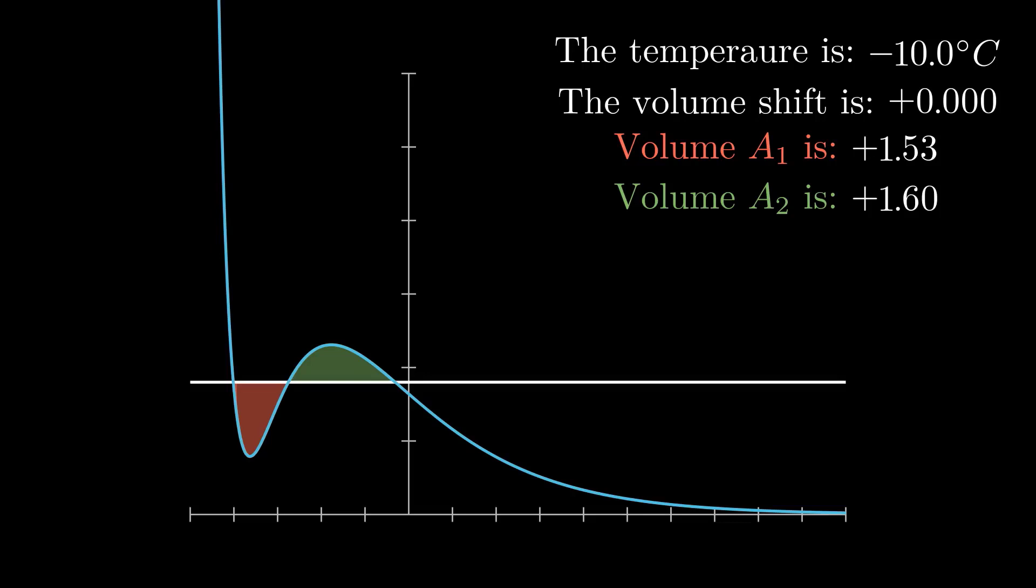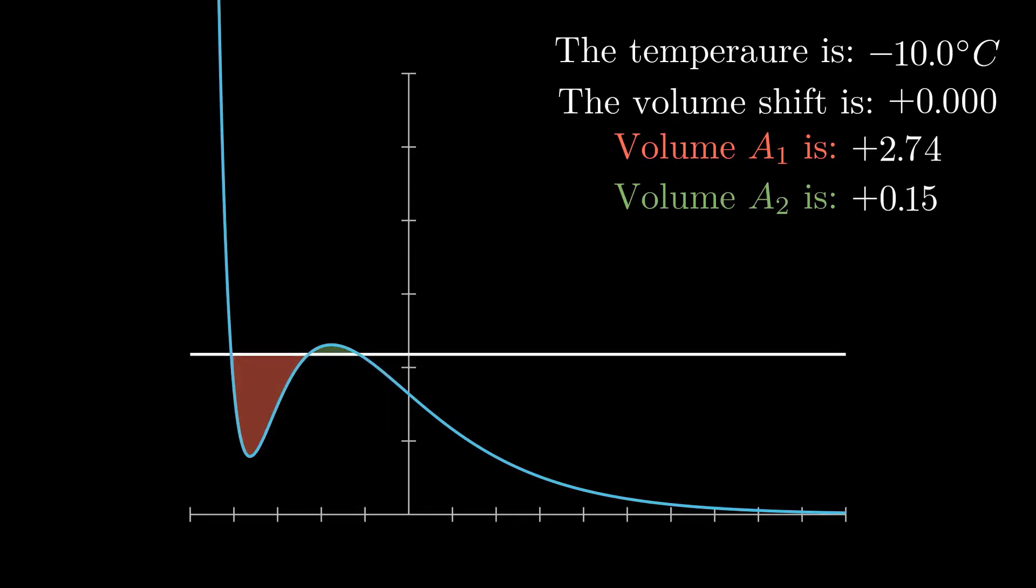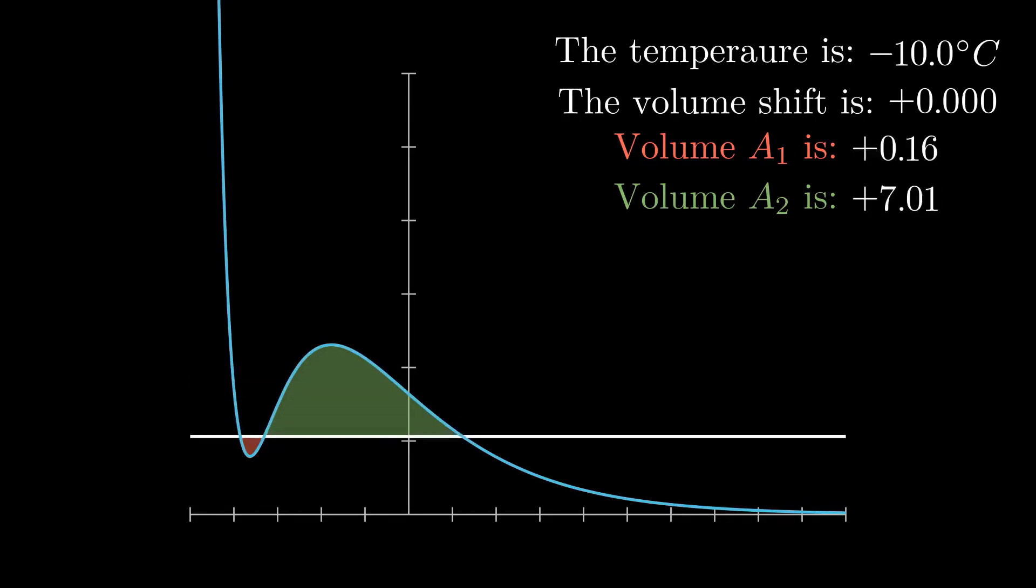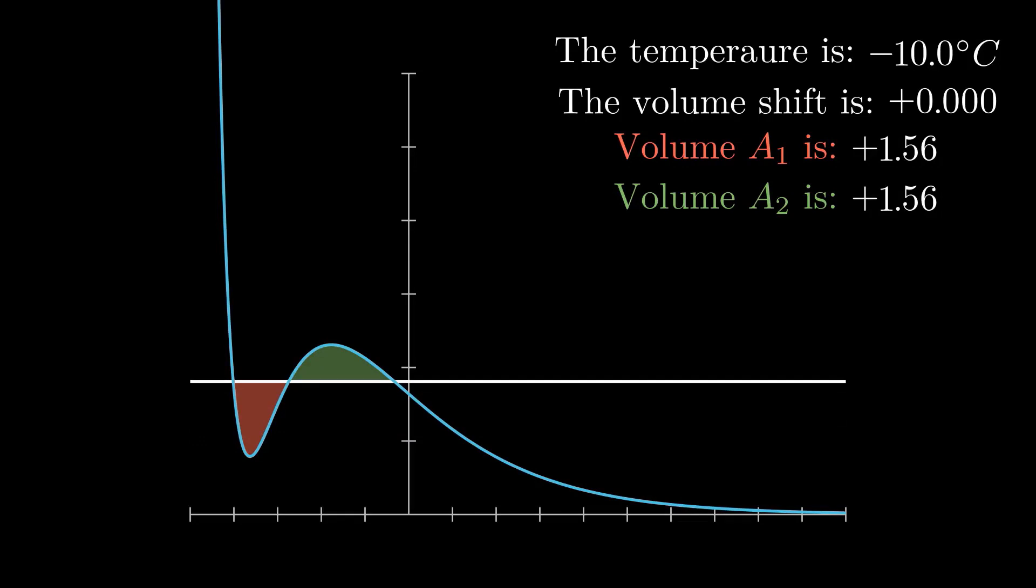What you see is that if we increase the vapor pressure we get a smaller area for A2. If we decrease the vapor pressure we get a smaller area for A1. What we want to try to do is get the areas just right so that they're equal.